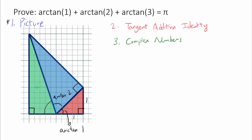The final angle is arc tangent of 3, because the opposite side is 3 times the length of the short side, giving opposite over adjacent equal to 3. So we have arc tangent of 1 plus arc tangent of 2 plus arc tangent of 3 equals 180 degrees, or pi radians. For the first method, a picture is indeed worth a thousand words.